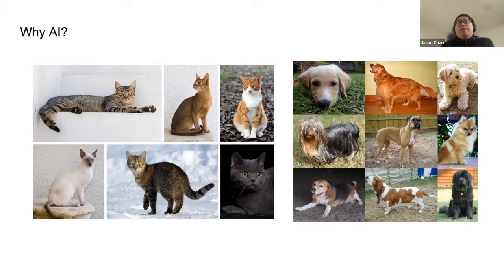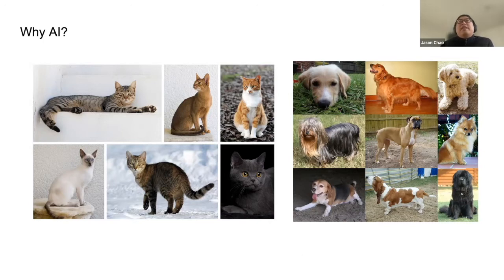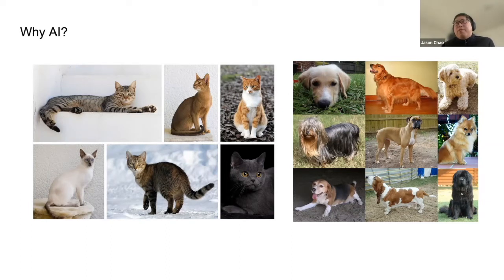Traditionally, we would have to code some logic and run it to analyze each image to tell us which is a dog and which is a cat. But when you have to write that logic out, it is very difficult, because cats might be sitting or standing in different positions, and you have different breeds with different hairs and styles. If you seriously want to write a program manually to identify cats and dogs, this is insanely difficult — not technically impossible, but very difficult.